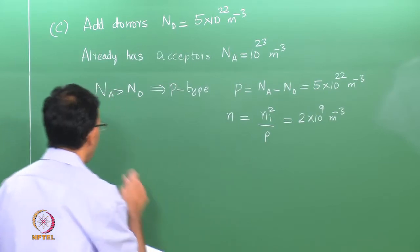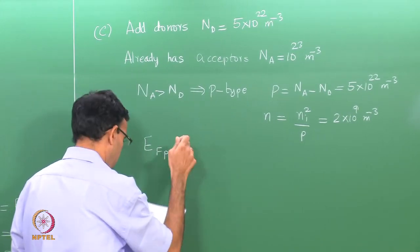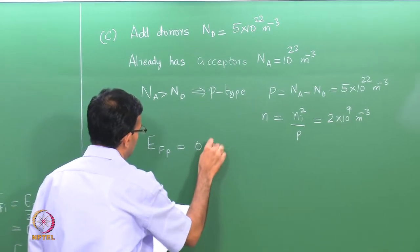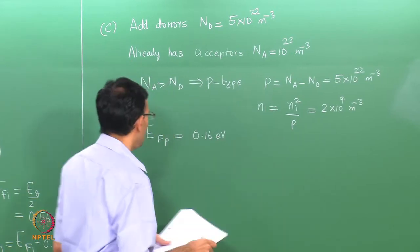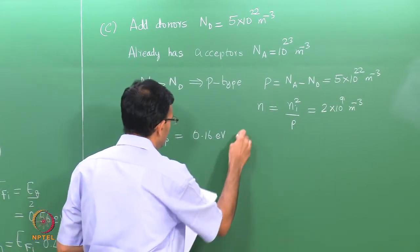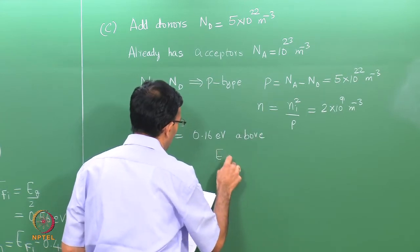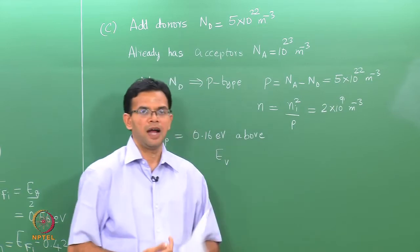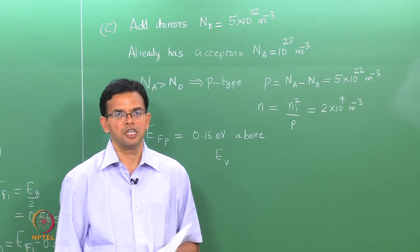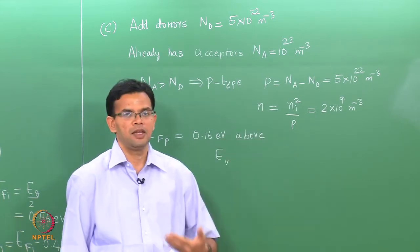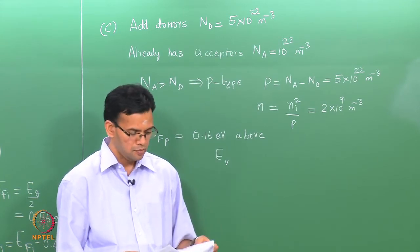N we calculate again using the law of mass action: N = n_i² / p = 2 × 10^9 per meter cube. We can calculate the position of the Fermi level using the new values of p. E_fp = 0.16 eV above E_v. The band gap will not change, because it is calculated based on intrinsic values, but because p and N change the position of the Fermi level will change.